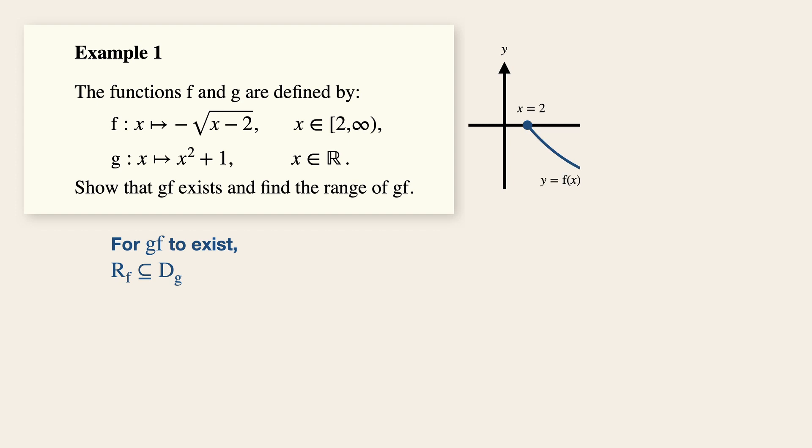Now sketching a quick graph of F with the given domain from the question, the range is negative infinity to zero inclusive and this is a subset of the domain of G given by negative infinity to positive infinity or all the real numbers. Therefore we conclude that the function GF exists.